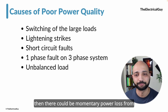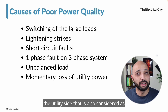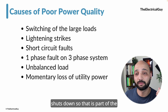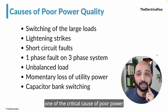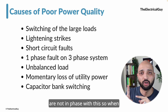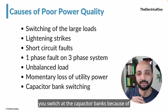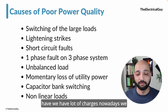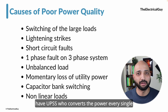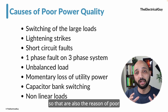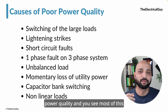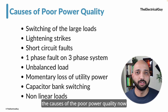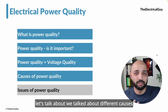Momentary power loss from the utility side is also considered poor power quality, since equipment shuts down when power is lost. Capacitor bank switching is another critical cause — because voltage and current are out of phase, the charging and discharging of capacitor banks causes imbalances. Non-linear loads such as switching devices, chargers, and UPS systems that constantly convert power also cause poor power quality. Notably, most of these causes are not in the utility's control — they must be managed at the customer's end.